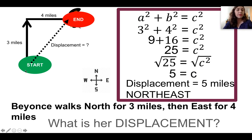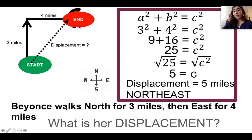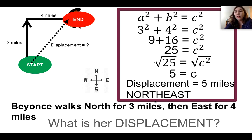Our c is five, so Beyoncé's displacement is five miles. It's northeast because the tip of the arrow, pointing from start to end, is between north and east. If you need more practice with the Pythagorean theorem, contact me and we can video conference so I can give you more problems.